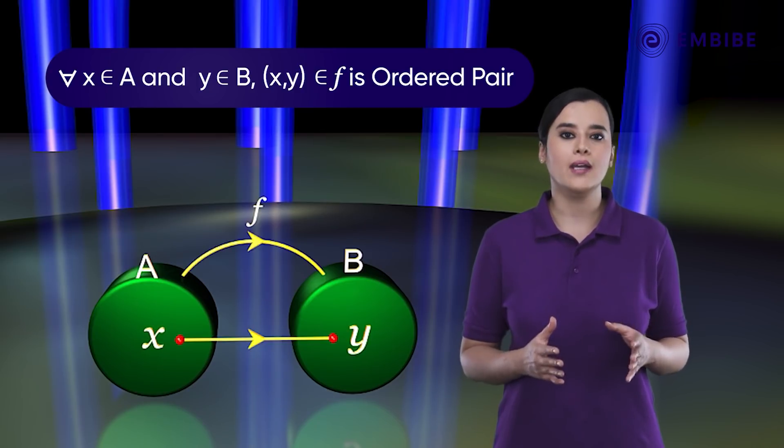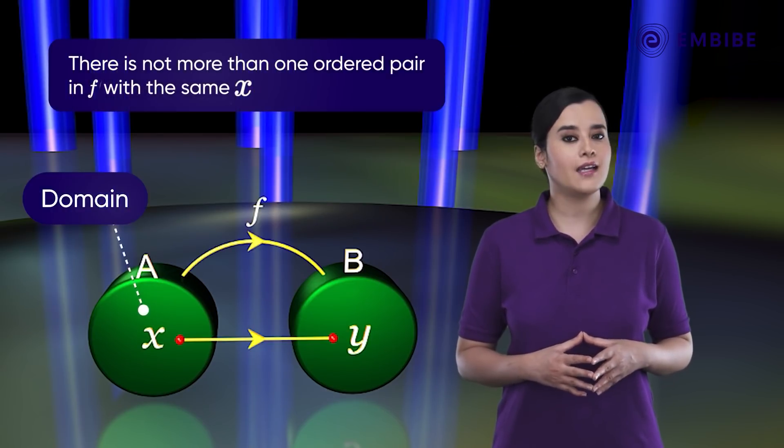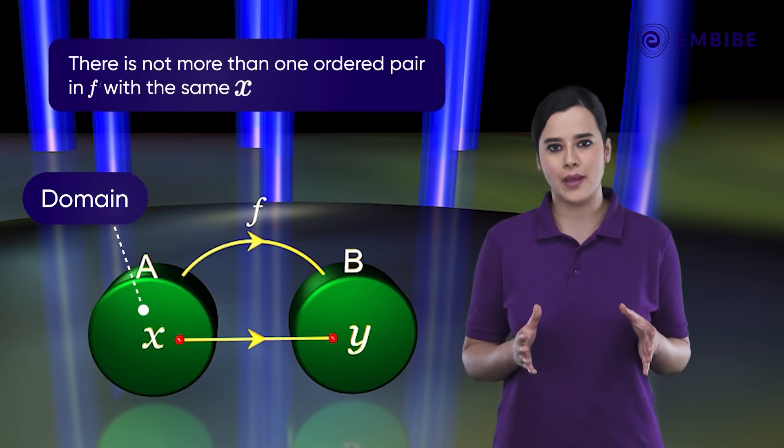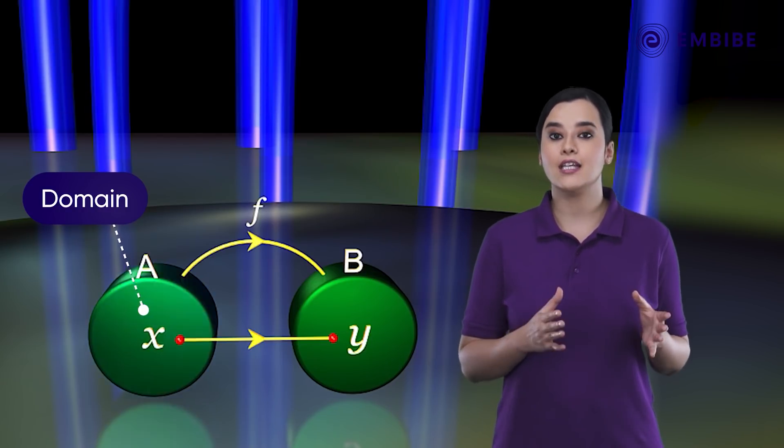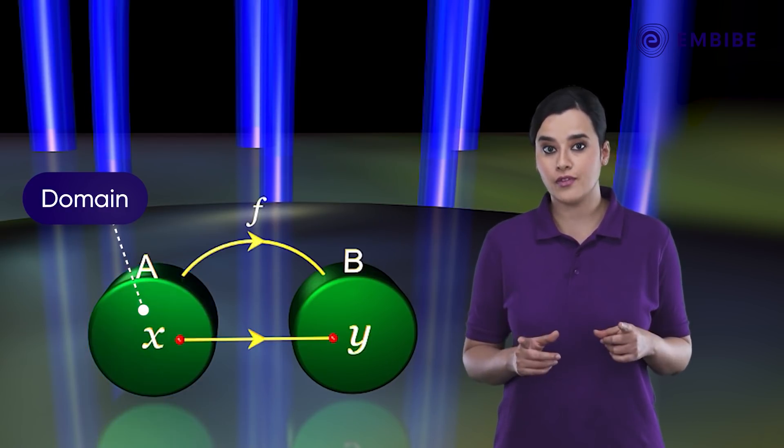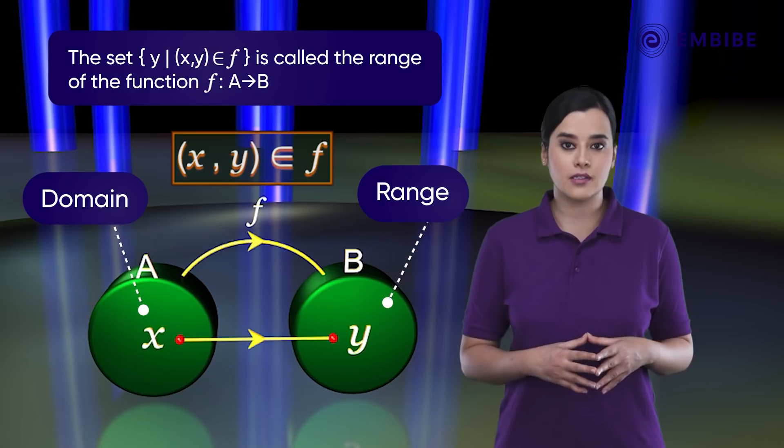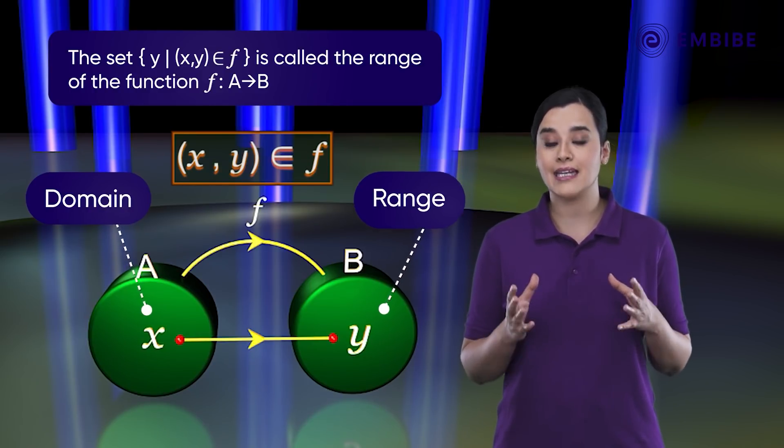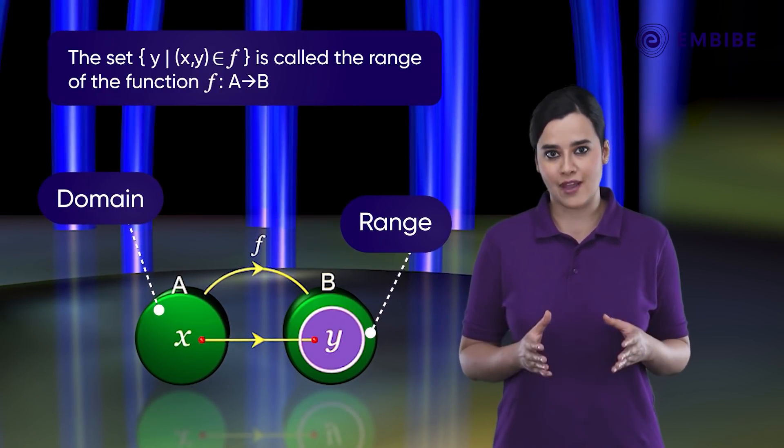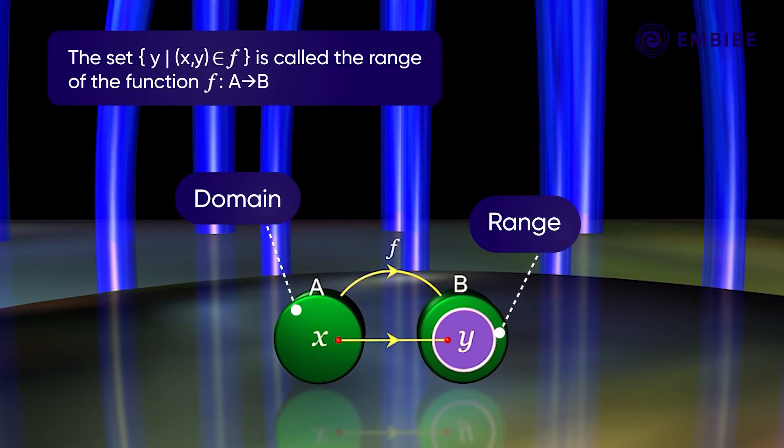There is not more than one ordered pair in f with the same x. A is called the domain of f. The set of elements which are in the second place of ordered pairs in f is called the range of f. Thus, the set {y such that (x, y) belongs to f} is called the range of the function.